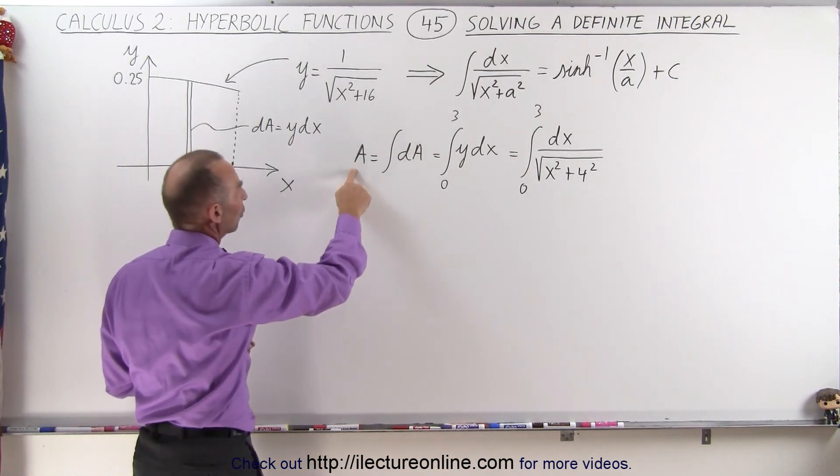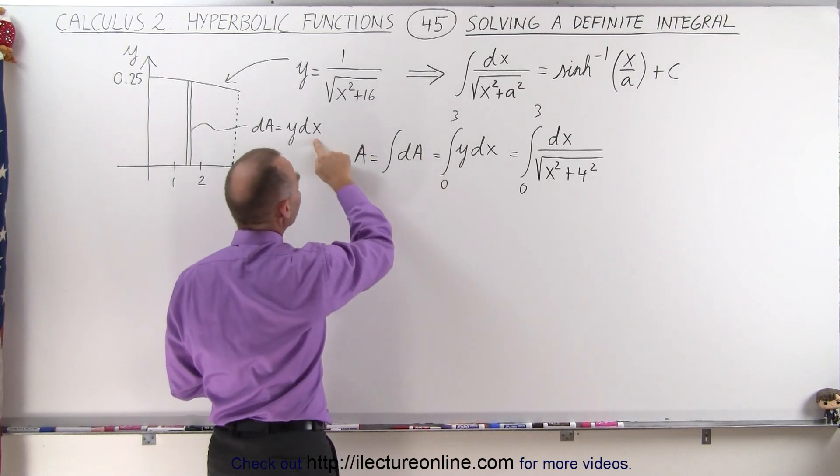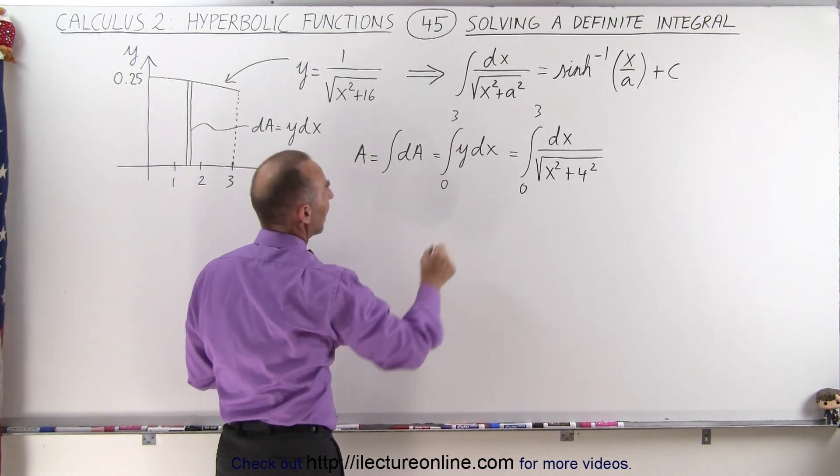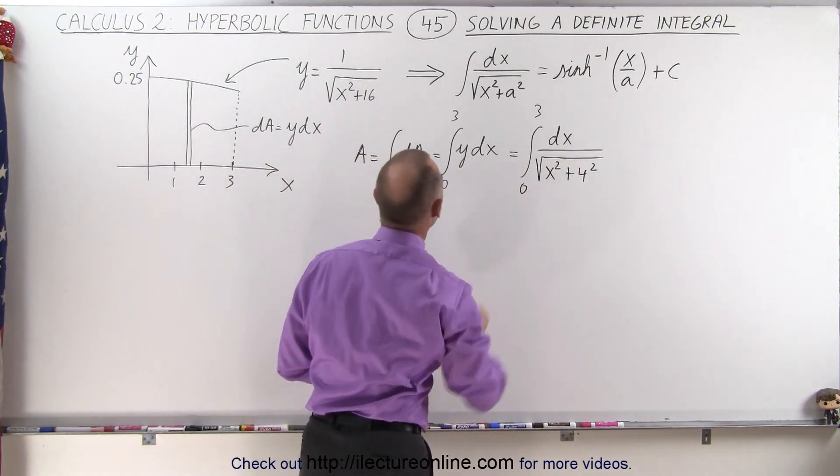And so the total area is going to be the integral of all the little dAs. And each dA is going to be y dx from 0 to 3, x equals 0 to x equals 3.